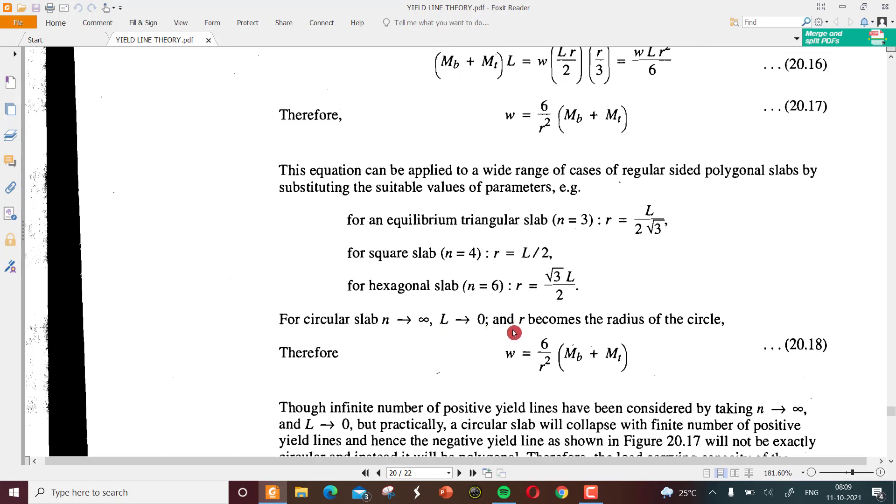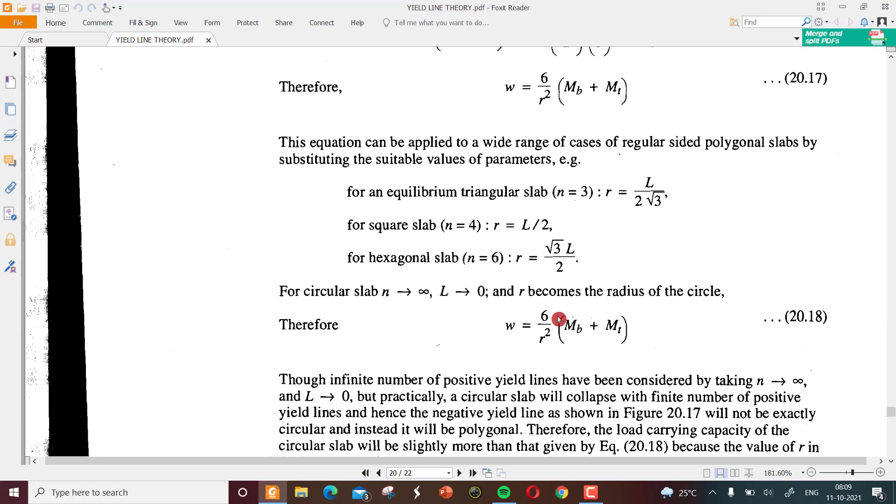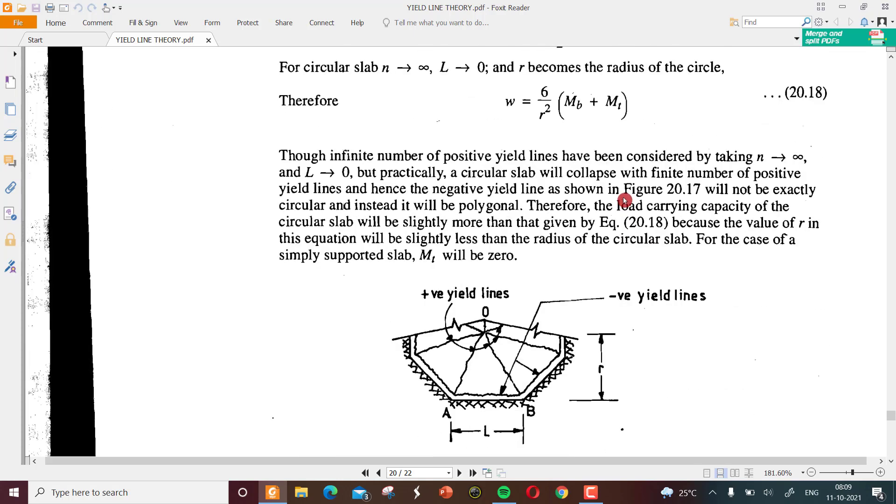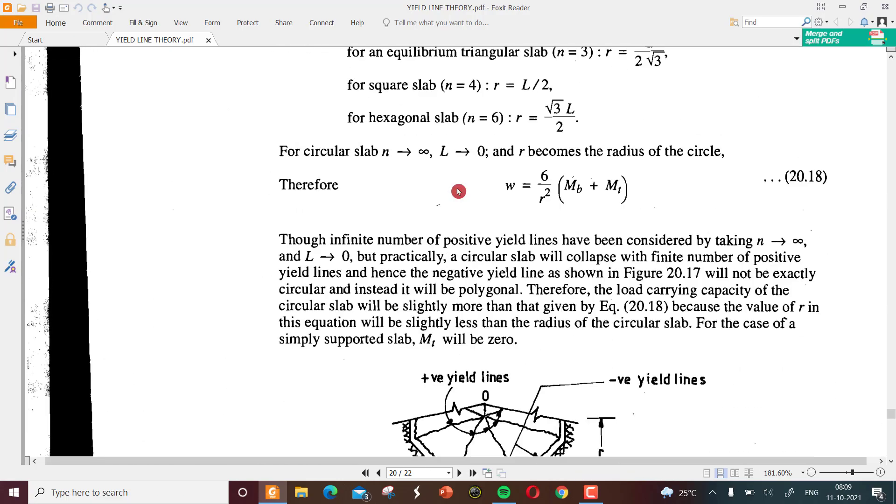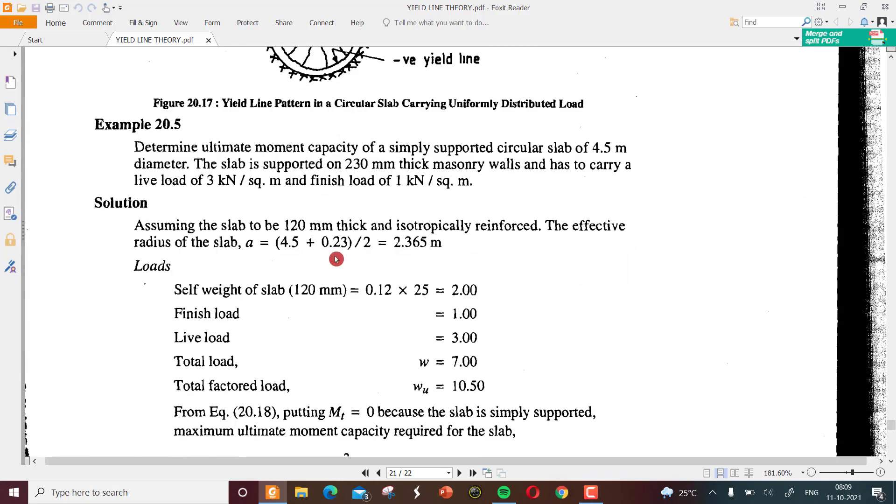For a circular slab, we have infinite number of faces and l also tends to zero because of very small segments by which it can be divided, and r becomes the radius of circle directly. For substituting those values, we will get w equals 6 by r squared times M_b plus M_t. This will be the basic equation for solving all the problems related to circular slabs. We will do a problem to make it clear.